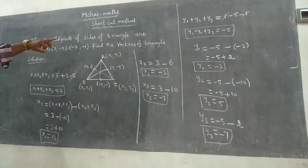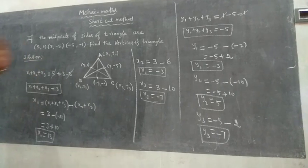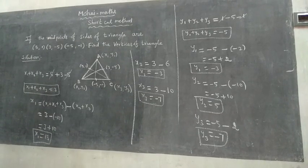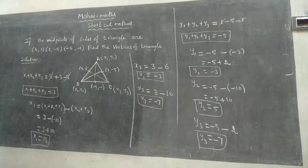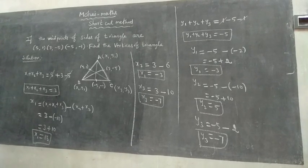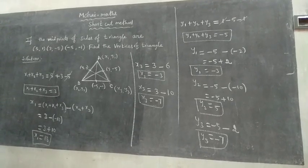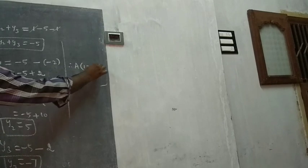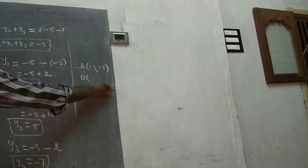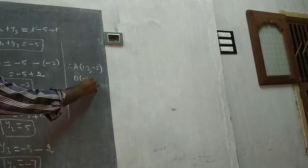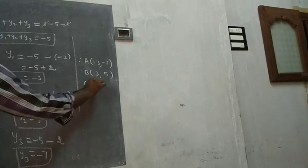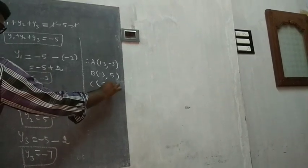Finally, the vertices are: point A is (x1, y1), point B is (x2, y2), and point C is (x3, y3). So point A, point B, and point C — point D is (-3, 5) and point C is (-7, -7).